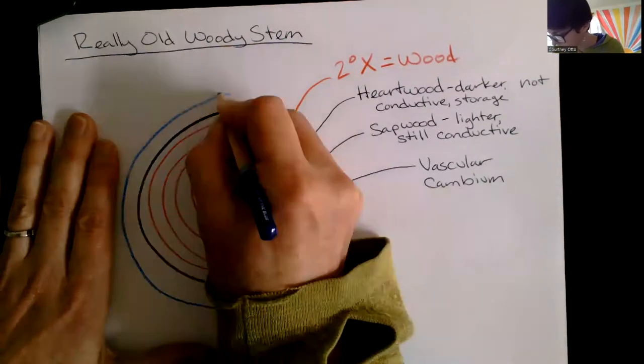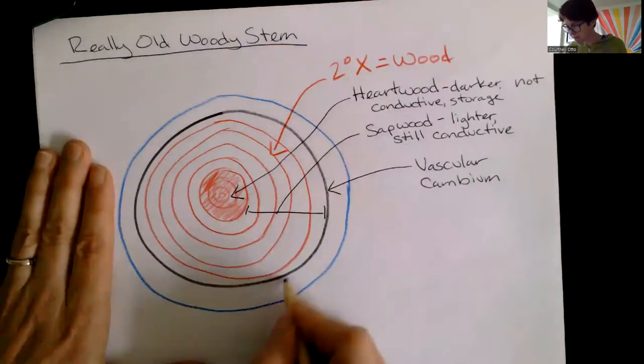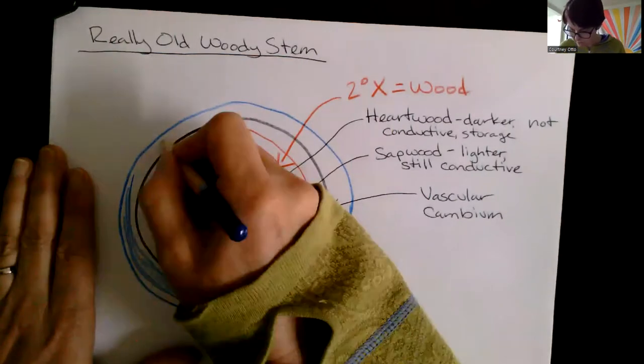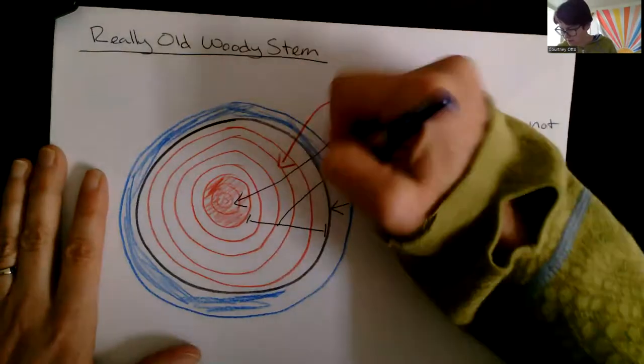When you look at an old woody stem, secondary xylem is going to be the most numerous cells you see. So there's going to be a lot more of that than our secondary phloem. So I'm just going to add this as a little layer all the way around.